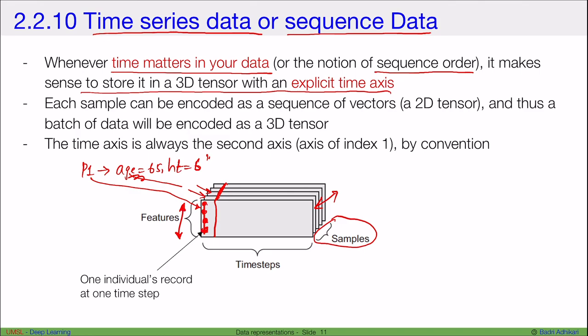And then this axis here represents the features. What are the various features we have: age, etc. Now time step simply adds one more dimension by recording. Maybe this is in time T1, maybe this is in time T2, the same person's attributes in a different time, in another time and so on. Usually the time axis is always the second axis with axis index one by convention.